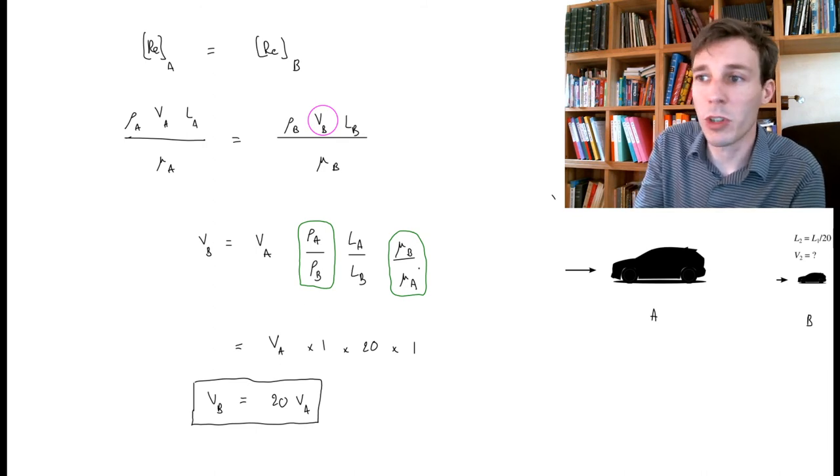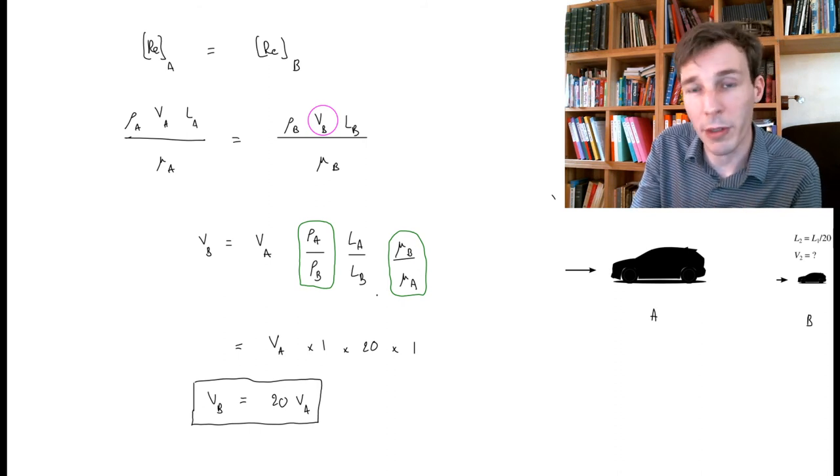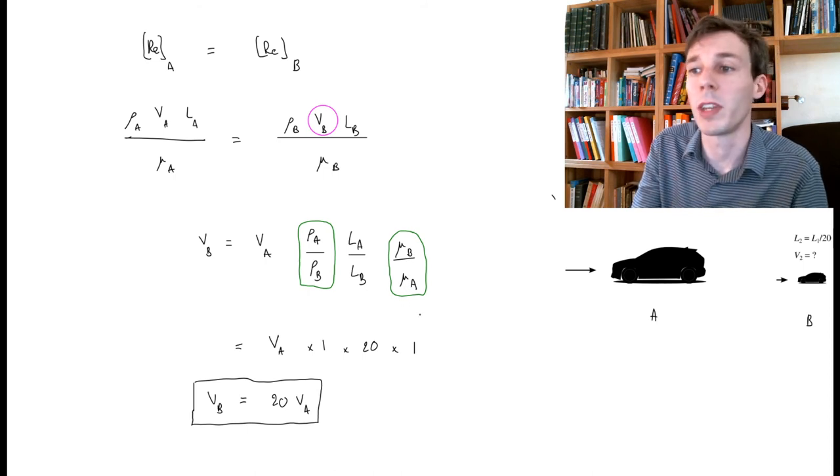And changing the temperature of the air will also change the ratio of viscosities. As you cool down the air, its viscosity will increase, and so the ratio of μB to μA will also increase, bigger than 1.